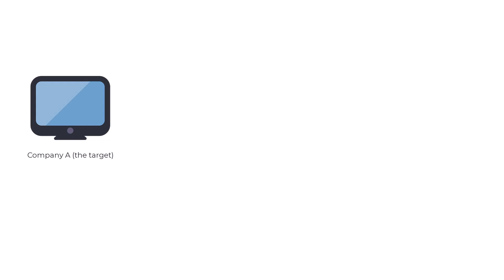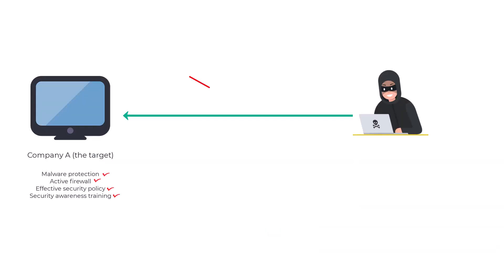A supply chain attack is basically the kind of attack where a company is attacked not directly by the cyber criminals, but by the criminals going through a third-party company that has some sort of network access to the actual target company. Let's assume you have Company A — Company A is the target. The problem is that Company A is very well defended: they've got great anti-malware, a great firewall, and a great security policy in place. Basically, you cannot attack them directly.